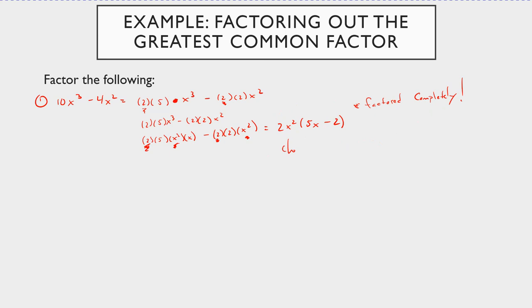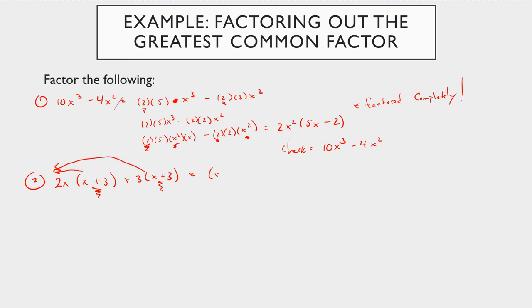You can check this: if you redistribute, 2x squared times 5x gives 10x cubed, and 2x squared times negative 2 gives minus 4x squared — you get back to where you started. Now let's try 2x times the quantity x plus 3, plus 3 times the quantity x plus 3. Notice that both terms contain an x plus 3, so I'm going to factor it out. When I take out the x plus 3, I'm left with 2x plus 3. So the answer is x plus 3 times the quantity 2x plus 3.